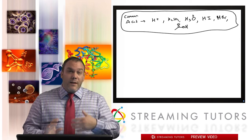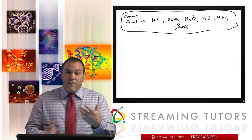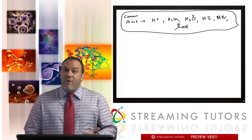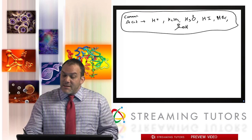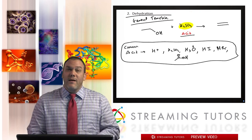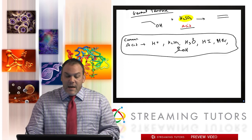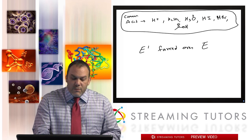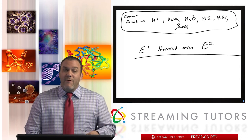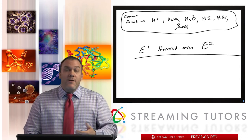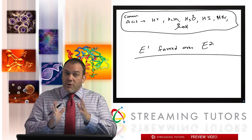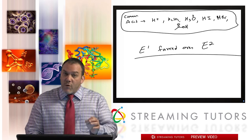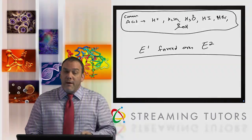With dehydration, we don't need as much detail as we went into with E1 and E2. This is a different pathway — with alkyl halides we had a strong base, but dehydration is an acid pathway, completely different philosophy. It turns out that E1 is favored over E2 here. If an alcohol can go through E1 or E2, it always goes through E1 when it can.